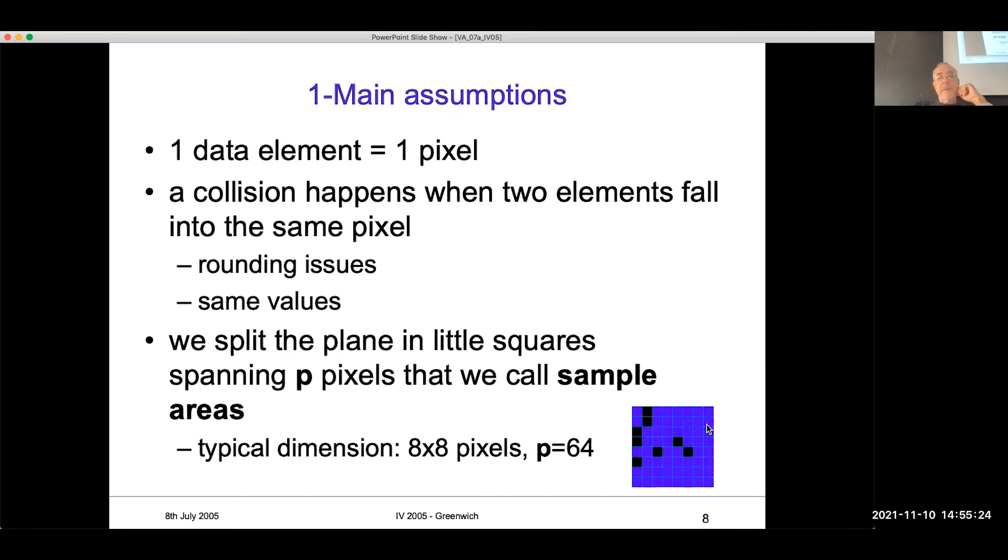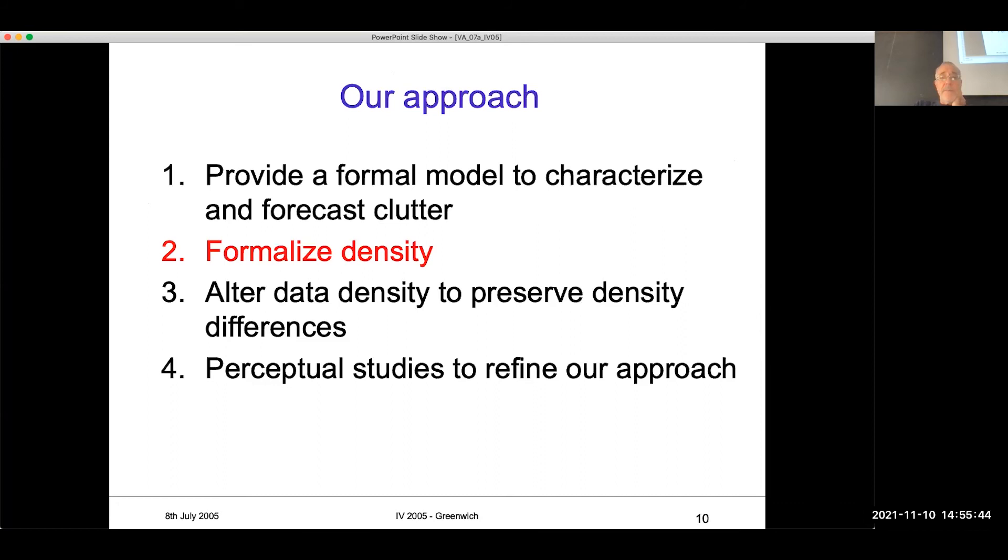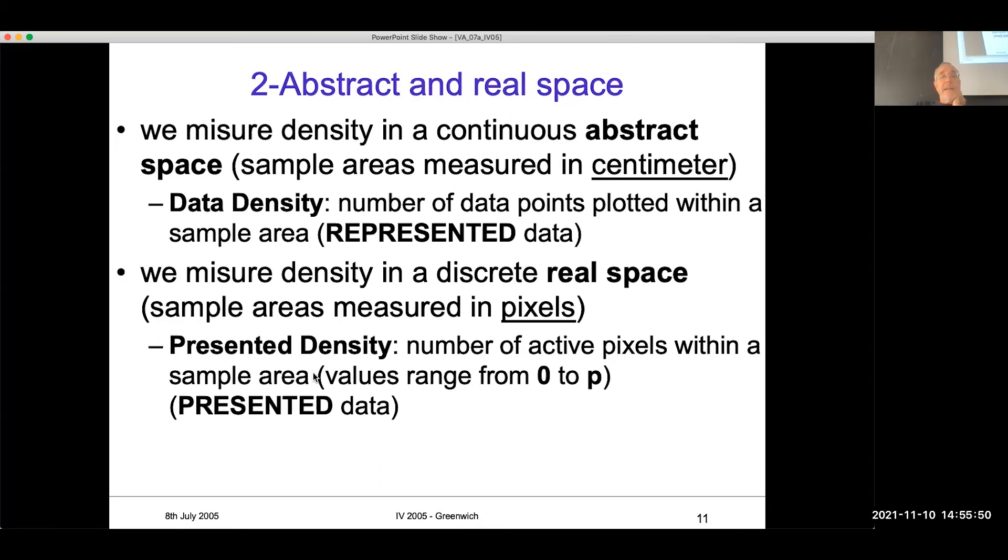And you can go from zero to P. If you have a square like this, the minimum density is zero. All the pixels are black. The maximum is 64. All the pixels are white. You cannot go above that. But if you put a million of items here, the number of pixels on will be 64, eight by eight. And this is the difference between represented data and presented data. The represented data is a real number. It is an integer. One million of elements, one million. In that square, you have one million of items. In the presented data, the maximum is 64.